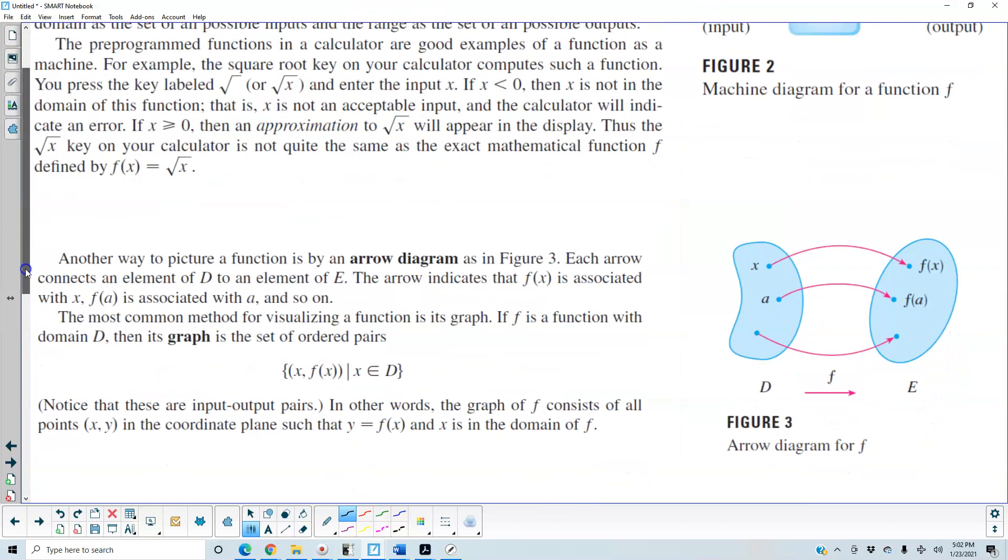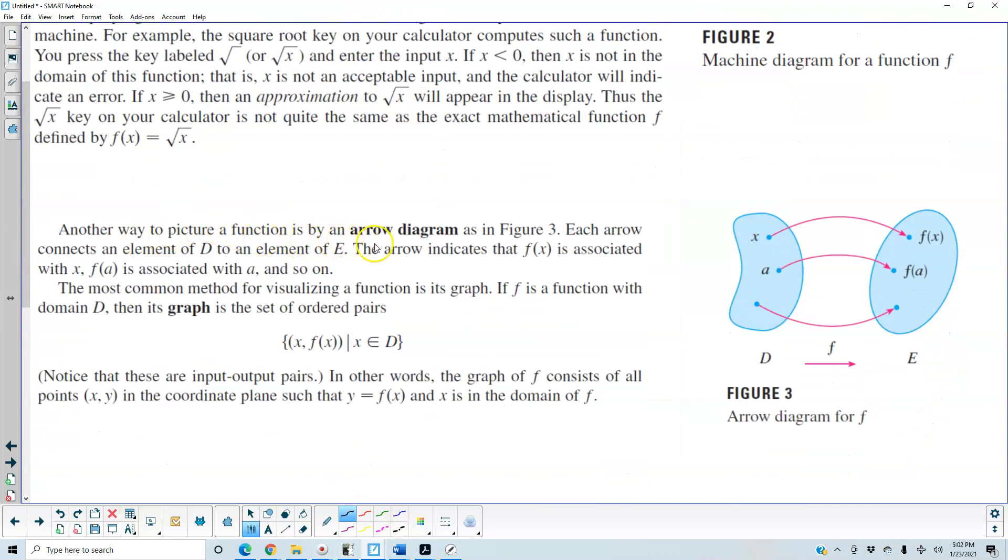Now another way to picture a function is by an arrow diagram as you can see here in figure 3. Each arrow connects an element of D in this whole set of D to an element of E. And the arrow indicates the function f of x is associated with x, f of a is associated with a and so on.